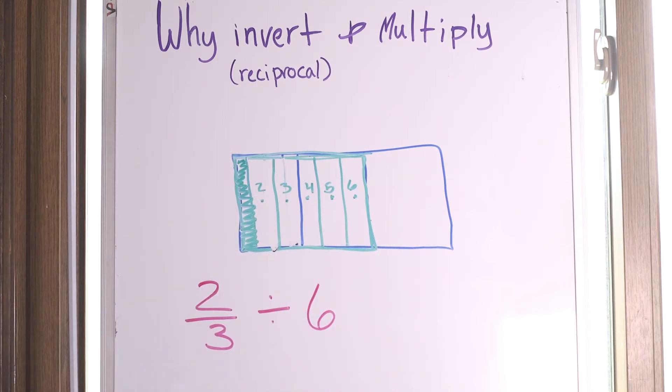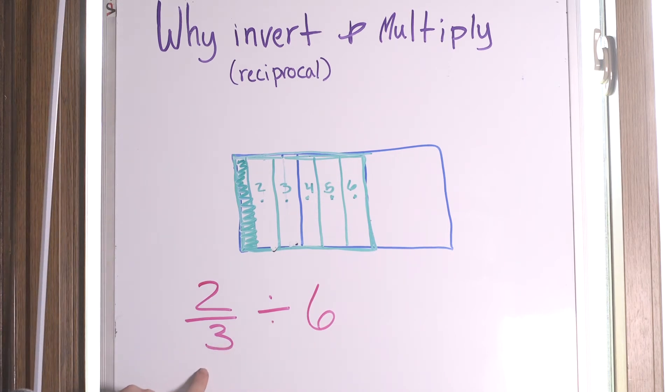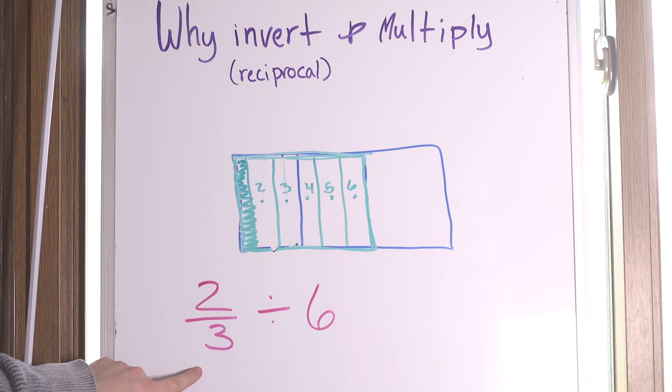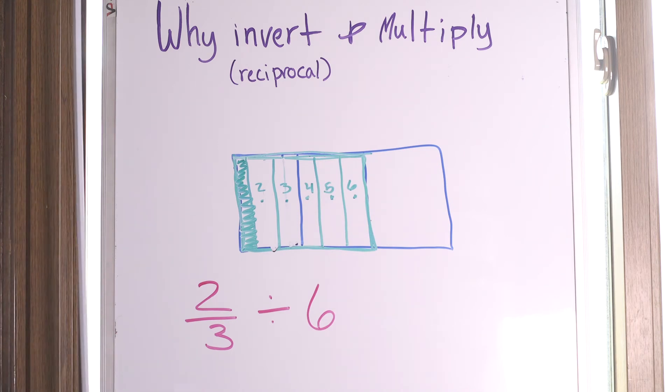Well, you might say it's one sixth and you would be right. It is one sixth of the two thirds candy bar, but it is not one sixth of the whole candy bar.